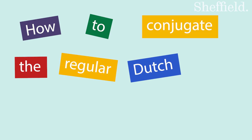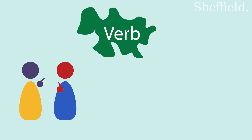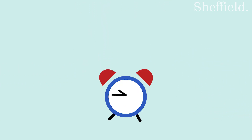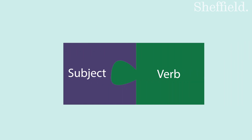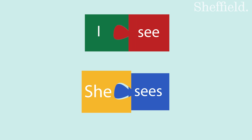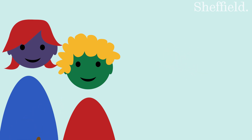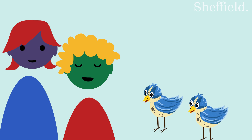How to conjugate the regular Dutch verb in the present tense. Verbs are changeable entities — they change with different subjects, different tenses, and different moods. This video will cover Dutch verbs in the present tense, or to be precise, the conjugation of the Dutch verb in the present tense. The good news is the Dutch verb is not too complicated to conjugate, but there are some spelling rules to get to grips with. If you know the spelling rules for the verb, you know them for the entire language — so we are killing several birds with one stone.